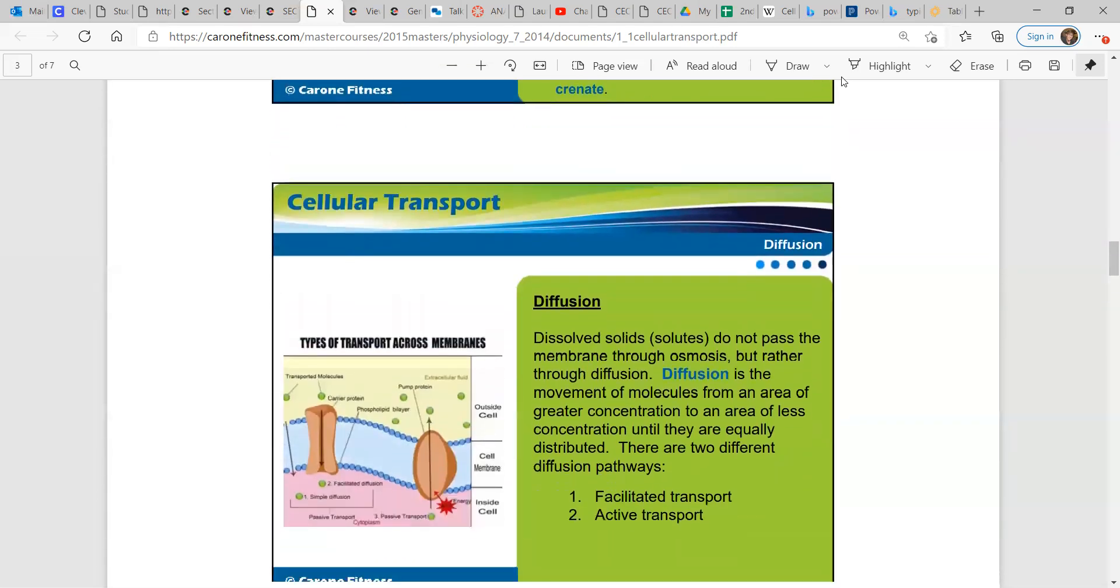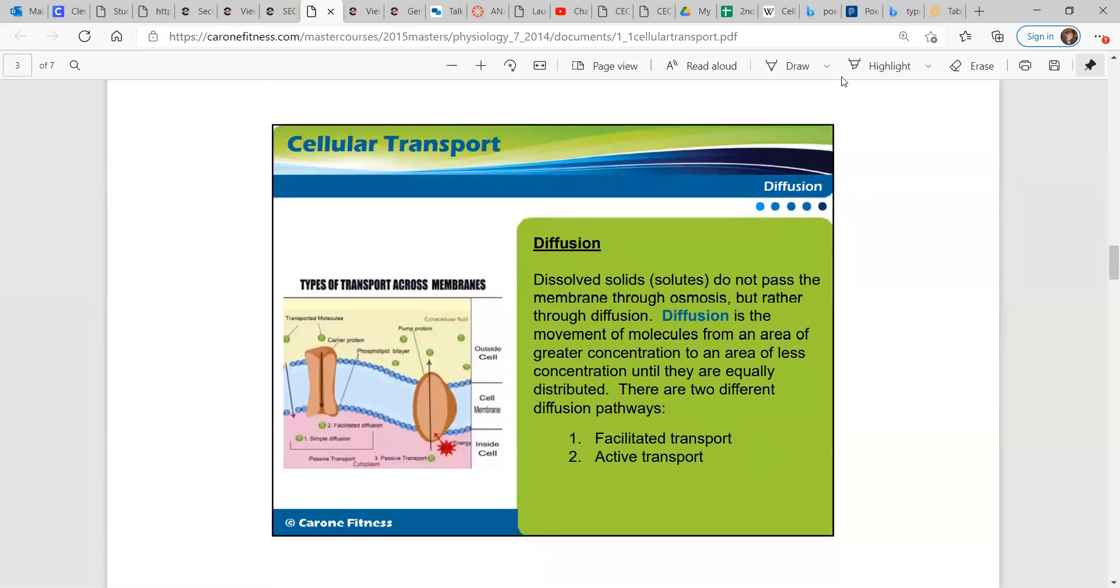Dissolved solids or solutes do not pass the membrane through osmosis. Osmosis is only water. These solids are transferred through diffusion. Diffusion is the movement of molecules from an area of greater concentration to an area of less concentration until they are equally distributed. And there are two different diffusion pathways: facilitated transport and active transport.